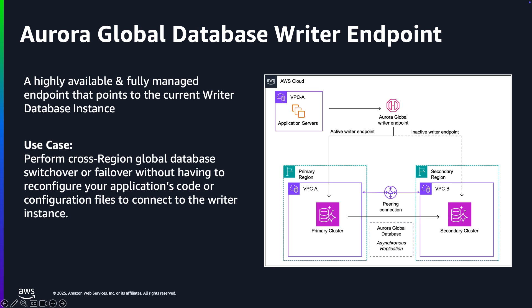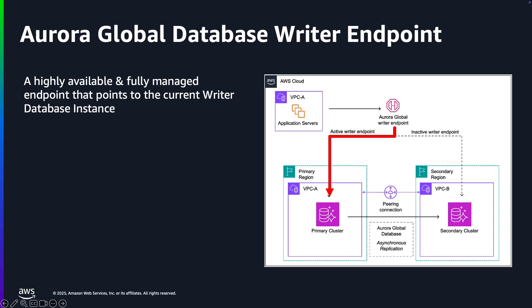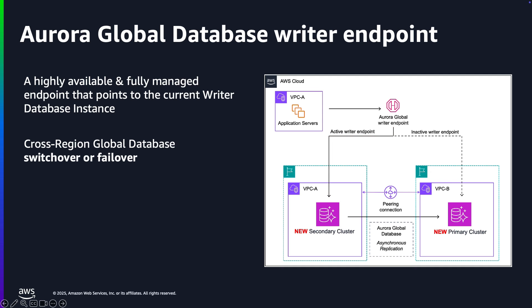Now we'll see how it works in this example in the diagram here. We have an Aurora Global Database with the primary region on the left, region A, and the secondary region on the right, region B. The Global Database Writer Endpoint will point to the primary writer instance in the cluster on the left. In an event of a cross-region global database switchover or a failover, region B on the right-hand side, which was previously the secondary region, is now promoted to become the new primary region, and region A on the left-hand side will now become the new secondary region.